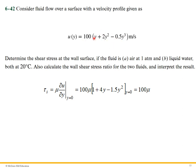We take the derivative of this equation with respect to y, which is shown here. We evaluate it at y equals zero, so this term goes away, this term goes away, this term goes away, and we're simply left with 100 times mu.